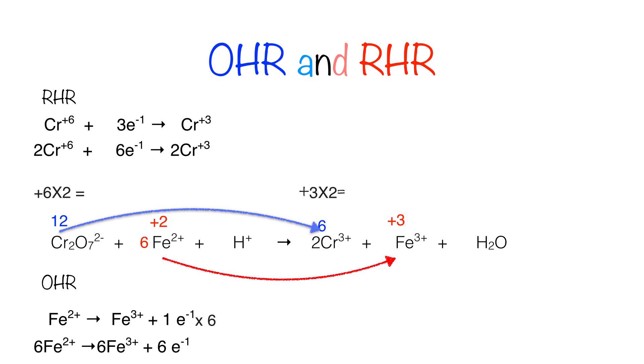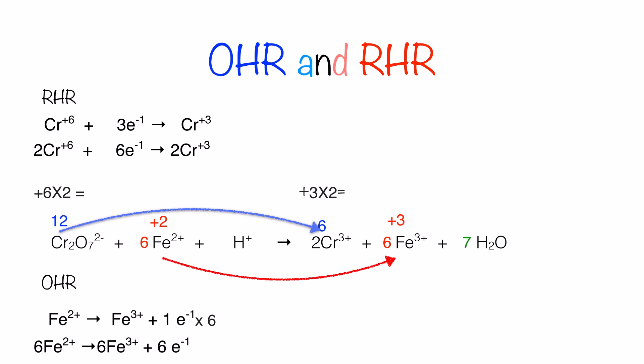We add a coefficient of six in front of Fe²⁺ and six in front of Fe³⁺ on the product side, balancing the iron atoms and producing the six electrons required for reduction. Chromium is already balanced. Next, we balance oxygen: there are seven oxygen atoms in the dichromate ion on the reactant side, so we add seven moles of water to the product side — the coefficient for H₂O is seven.